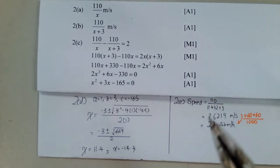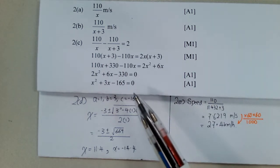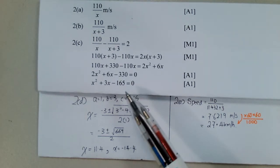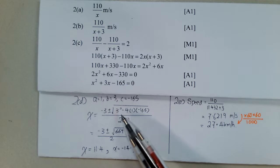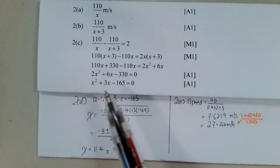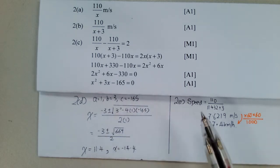In 2 part D, we are asked to solve this equation here. There is no way that you can actually factorize this except through the use of the quadratic formula. So a is 1, b is 3, c is negative 165.